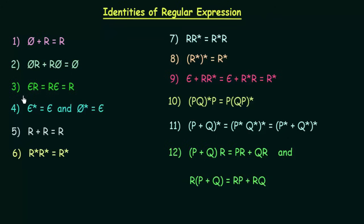The third identity says ε·r = r·ε = r. Here it says that if you perform the concatenation of ε and any regular expression r, then what you get is r itself. Note that multiple symbols can be used to denote epsilon.